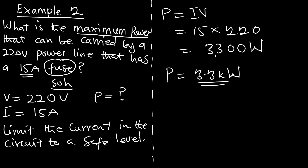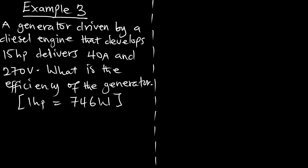Let's look at example three. A generator driven by a diesel engine develops 15 horsepower and delivers 40 amperes and 270 volts at its output. What is the efficiency of the generator? We take one horsepower to be equal to 746 watts.